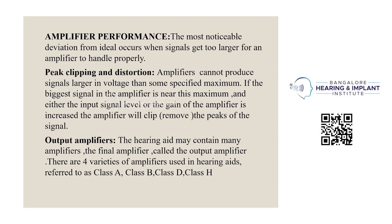The most noticeable deviation from ideal occurs when a signal gets too large for an amplifier to handle properly — this is called peak clipping and distortion. Amplifiers cannot produce signals larger in voltage than some specified maximum. If the input signal level or gain of the amplifier is increased beyond that maximum, the amplifier will clip the peaks of the signal output. Hearing aids may contain many amplifiers; the final one is called the output amplifier. There are four varieties of amplifiers used in hearing aids: Class A, Class B, Class D, and Class H.